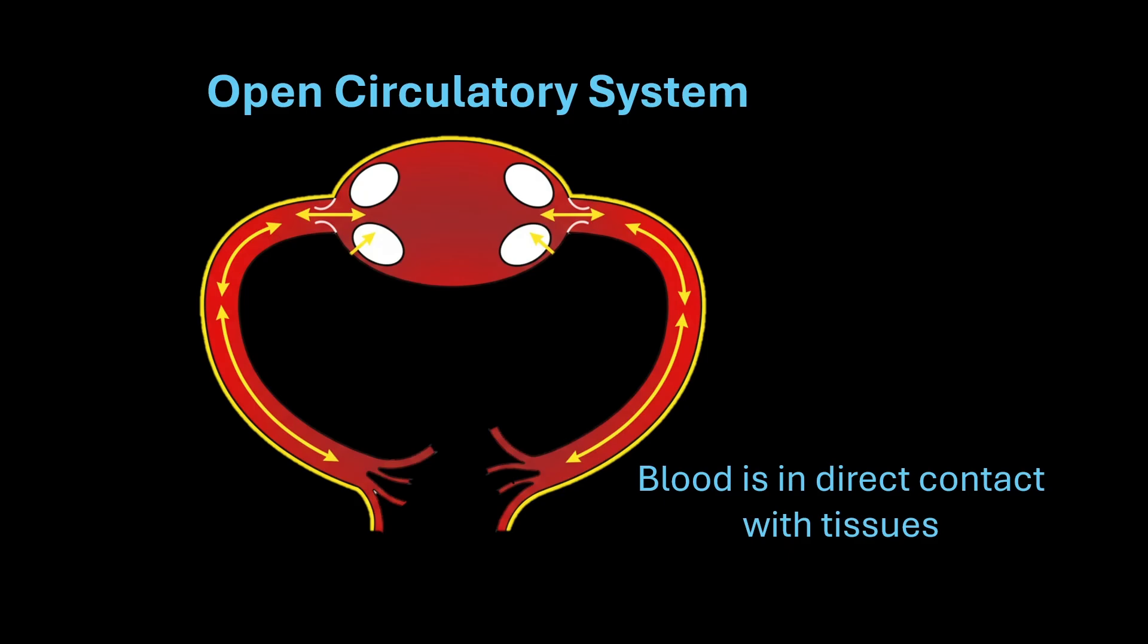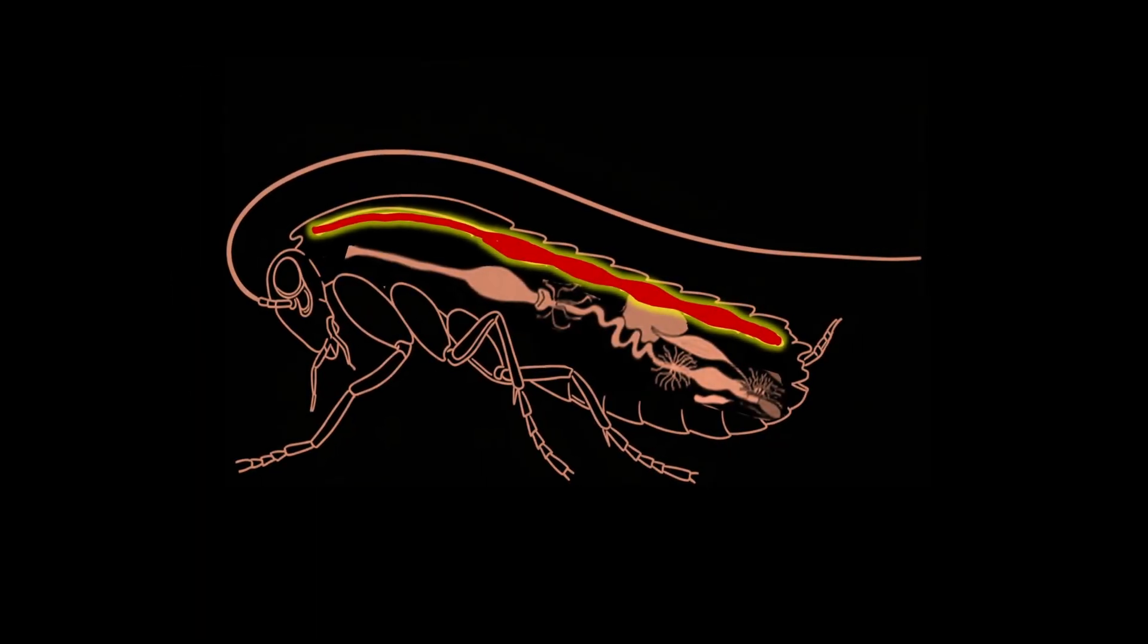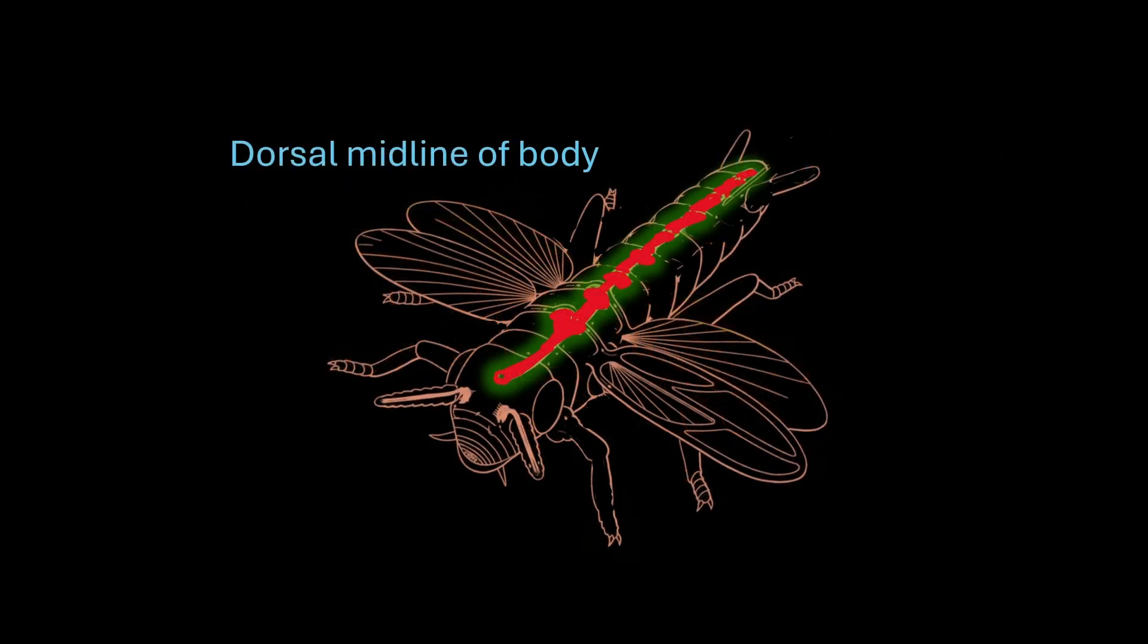But then the question arises: how does the blood move through the body without the vessels being present? So the cockroach has a long tube-like heart. This heart runs along the dorsal midline of its body. It's not just a hollow tube.